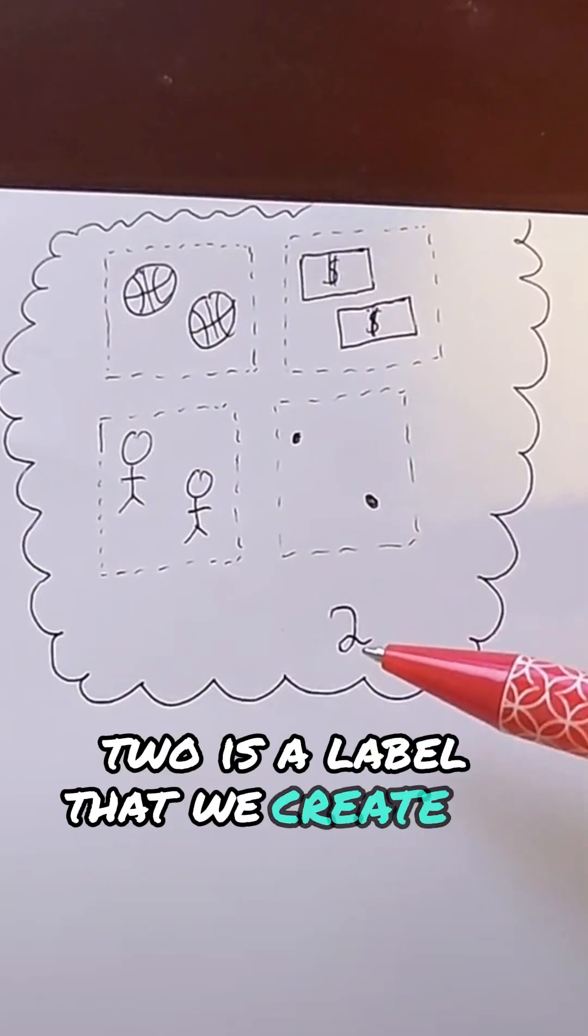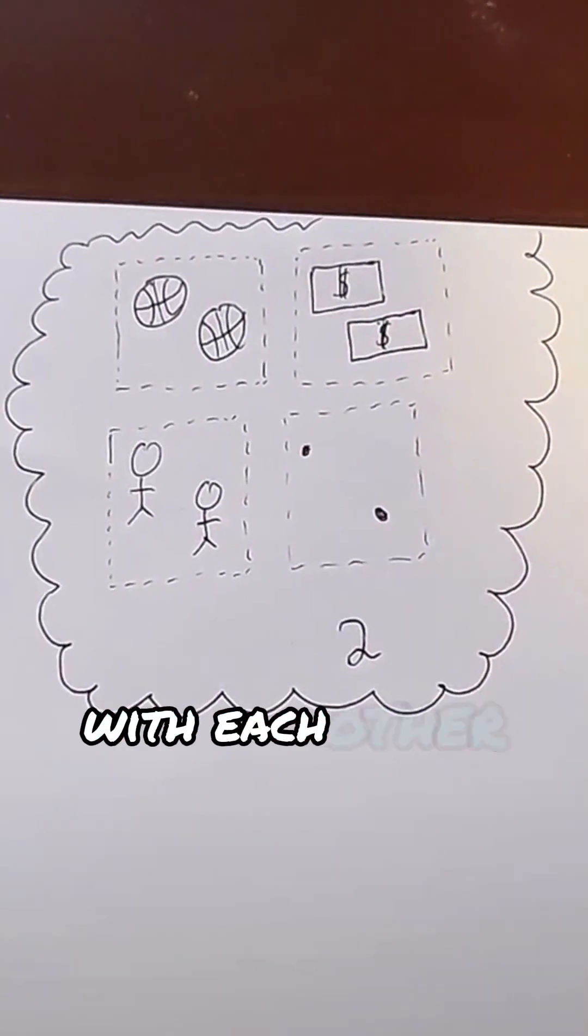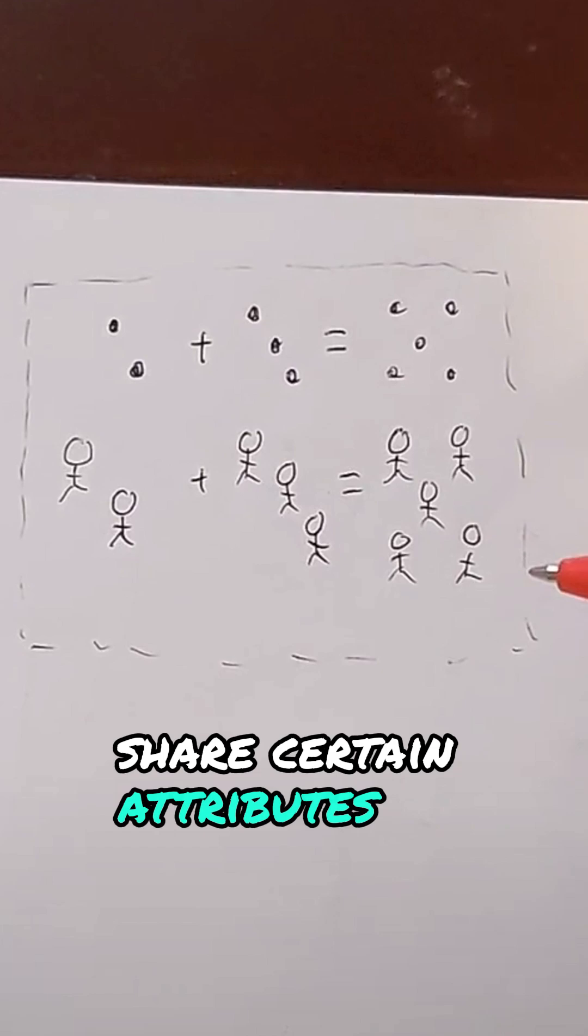Two is a label that we create in our heads to unify all of these objects because they share certain characteristics with each other. And that's because these real groups share certain attributes of interest.